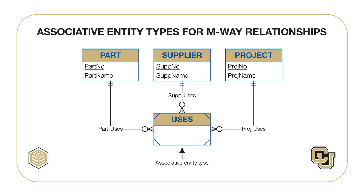The issue of when to use an M-way associative entity type can be difficult to understand. If a database only needs to record pairs of facts — for example, who supplies a part and what projects use a part — then an M-way associative entity type should not be used. In that case, there should be binary relationships between supplier and part, and between project and part. You should use an M-way associative entity type when a database should record combinations of three or more entities, such as which supplier provides parts on specific projects.